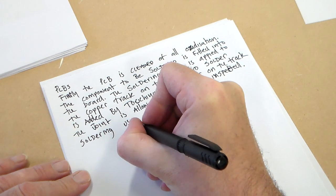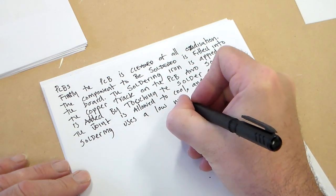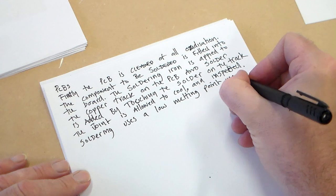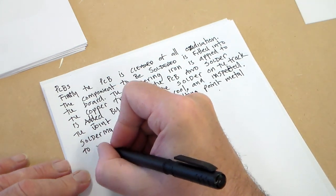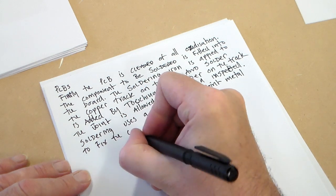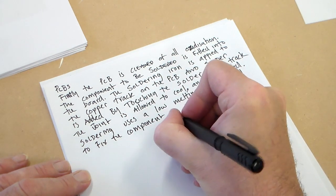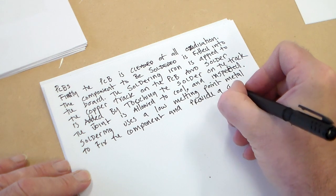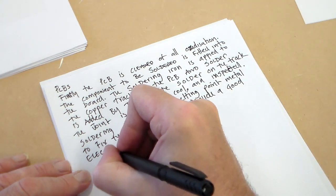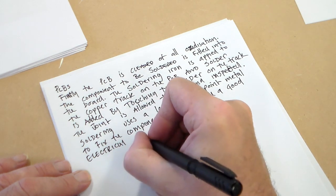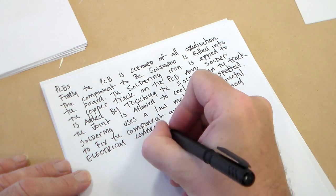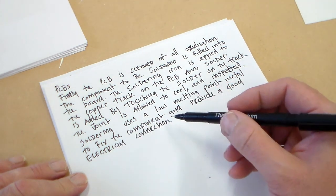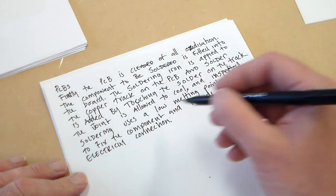Soldering uses a low melting point to fix the component and provide a good electrical connection. So basically, solder is a low melting point metal. It doesn't damage the circuit board. It fixes the component in place with the metal, and it also provides a good electrical connection.